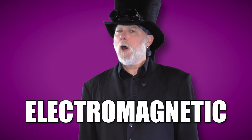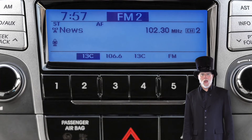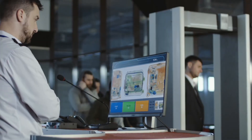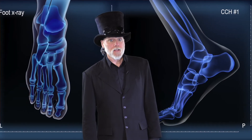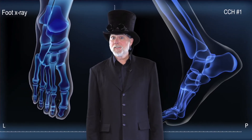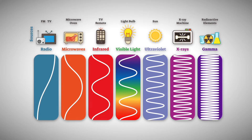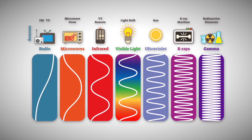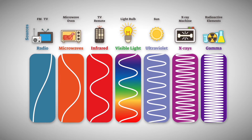Electromagnetic waves also include radio waves including Wi-Fi, gamma rays, and X-rays. They have the smallest wavelength and the highest energy. The wavelength of electromagnetic waves determines what type of wave is produced.